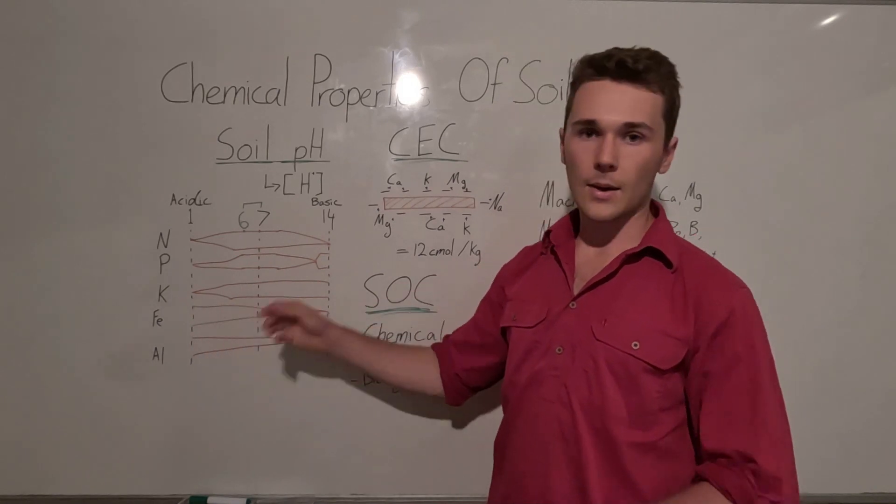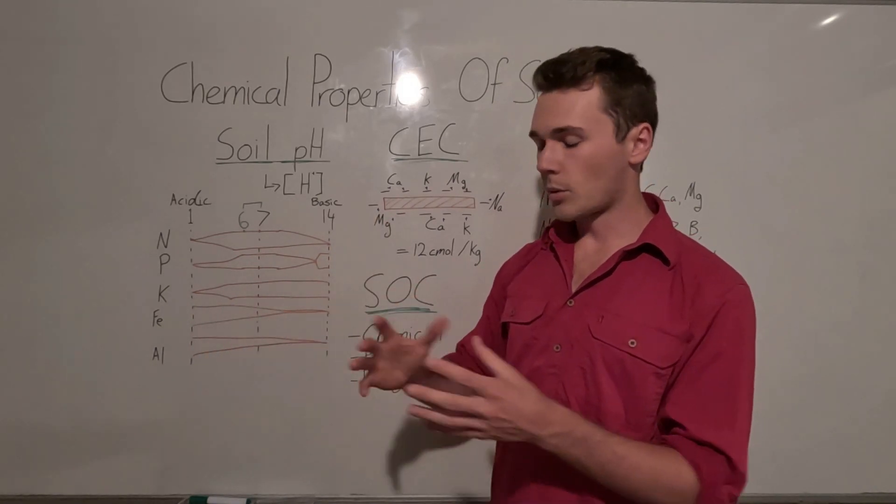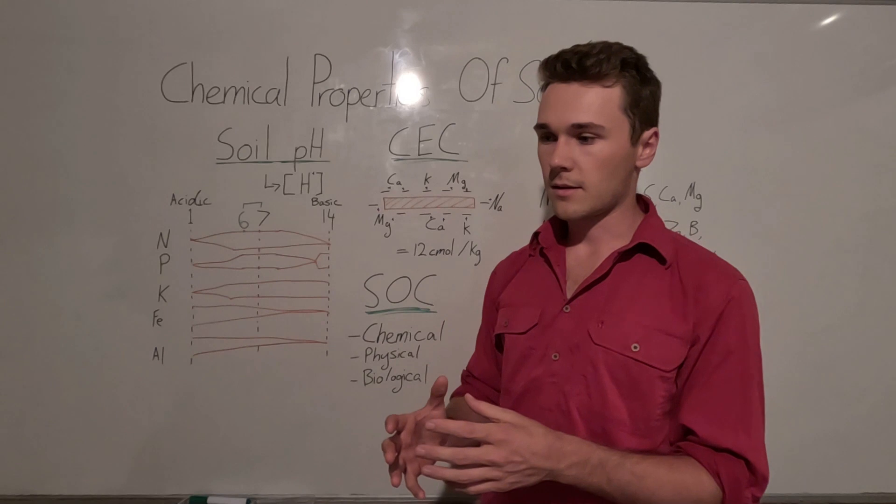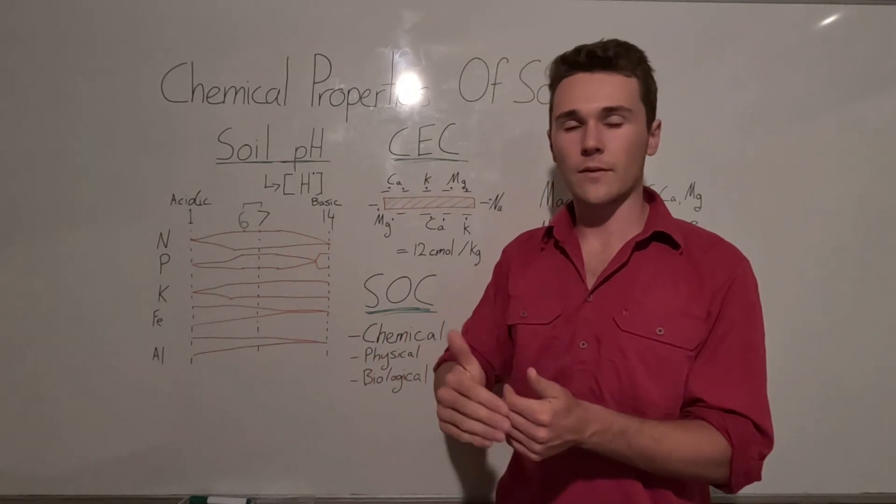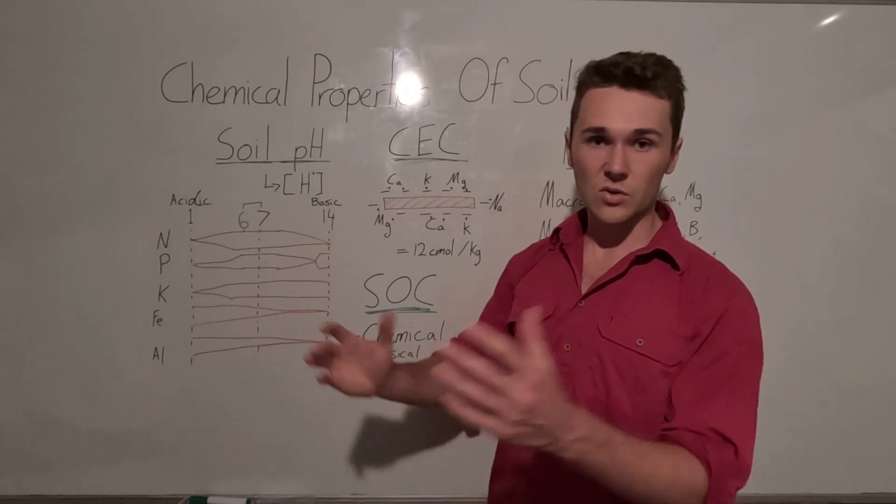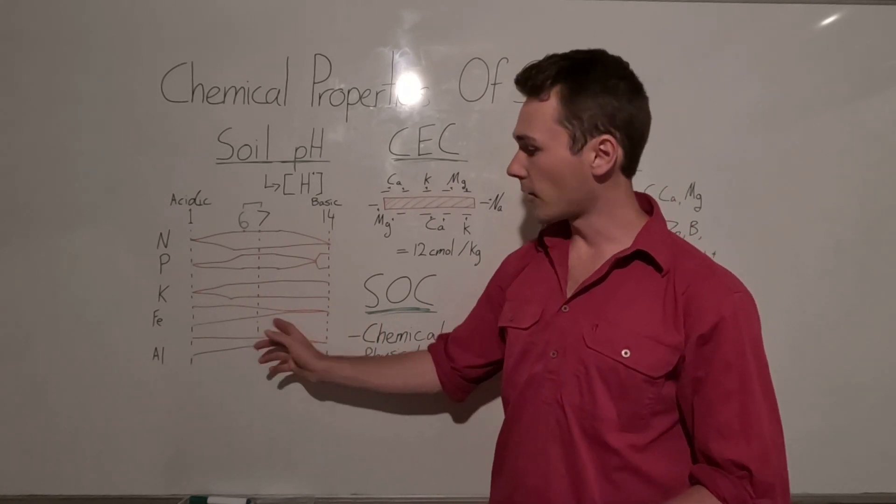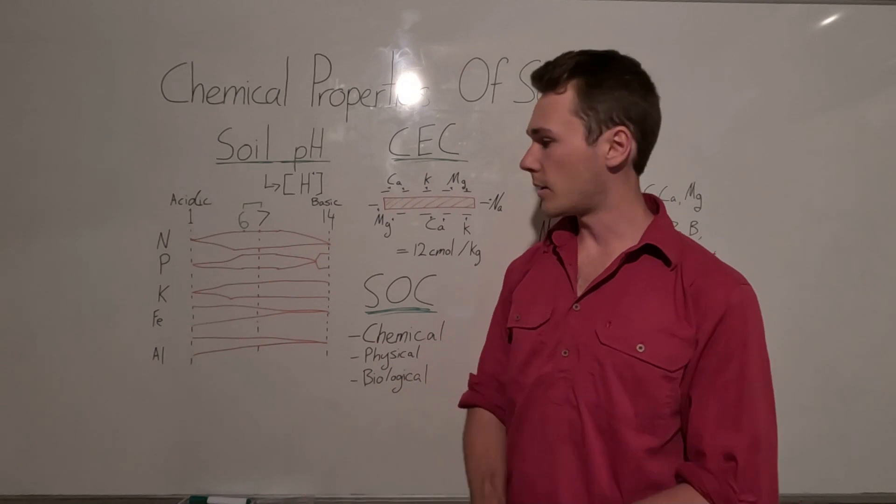And so for example, if we take iron, if our plants are iron deficient, the soil doesn't necessarily need to be iron deficient. It might just have a high pH which means the iron itself is not available to our plants. And so a management strategy that we can do is by lowering the pH, we can increase the availability of iron.